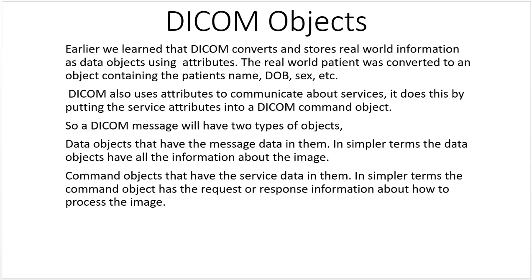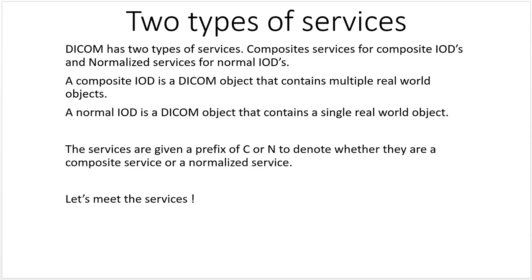There are two types of services: composite services for composite IODs, and normalized services for normalized IODs. A composite IOD is a DICOM object that contains multiple real-world objects. A normalized IOD is a DICOM object that contains a single real-world object. Services are given a prefix of C or N to denote whether they are composite or normalized.